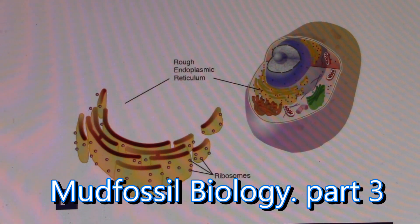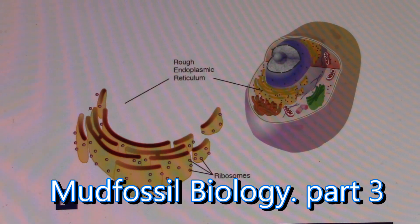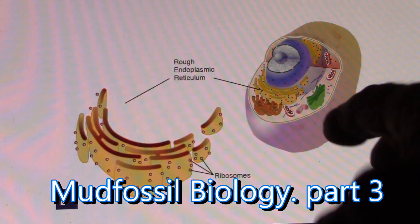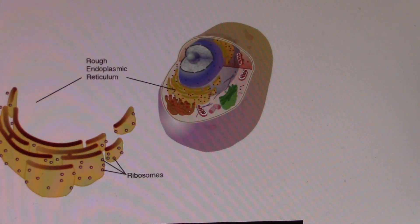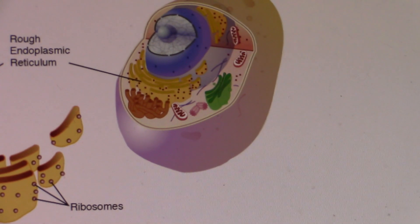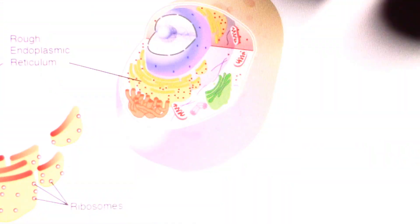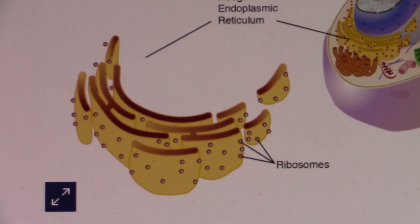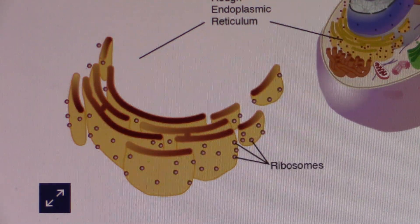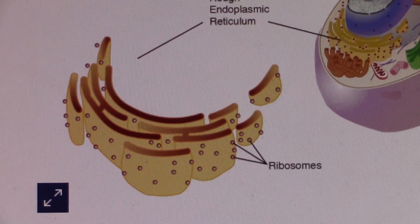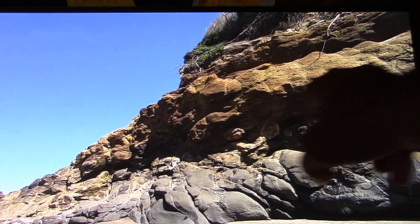Welcome to another mud fossil adventure. I'm getting ready to show you some mud-fossilized endoplasmic reticulum, which is part of a cell — it surrounds the outside of the nucleus. You're going to be seeing it enlarged right now, so I can explain it a little better to you.